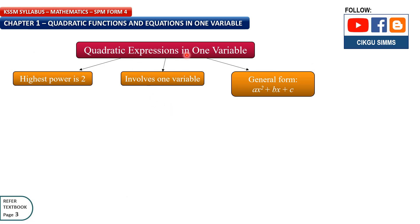So, quadratic expression in one variable: the highest power is x squared, as we discussed earlier — x to the power of 2. You cannot have any other number; the highest must be 2. It also involves only one variable, so your expression must have only x. For example, you cannot mix x and y, or mix p and q.